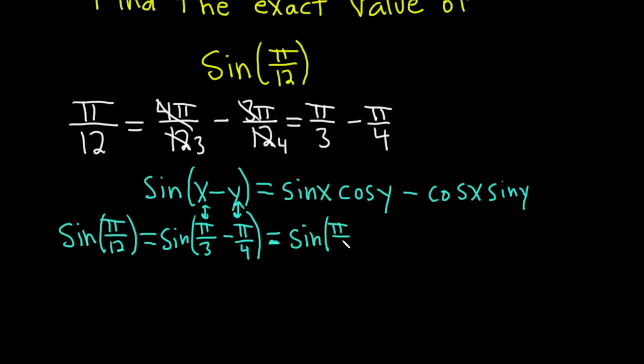and we have cosine of pi over 4 minus, and then cosine pi over 3, sine pi over 4. It's a lot to write,